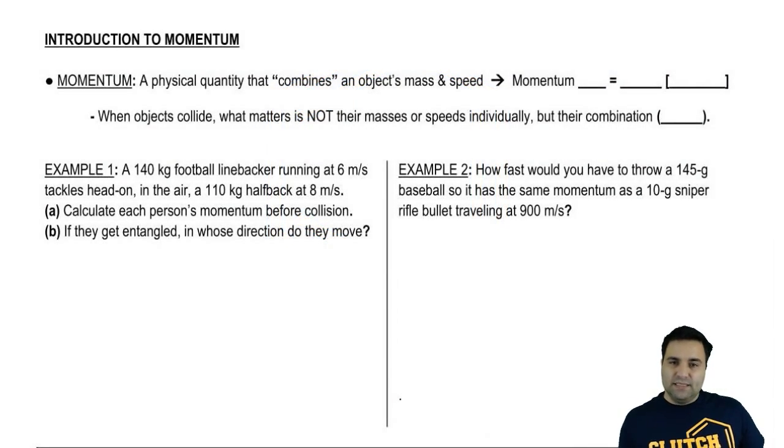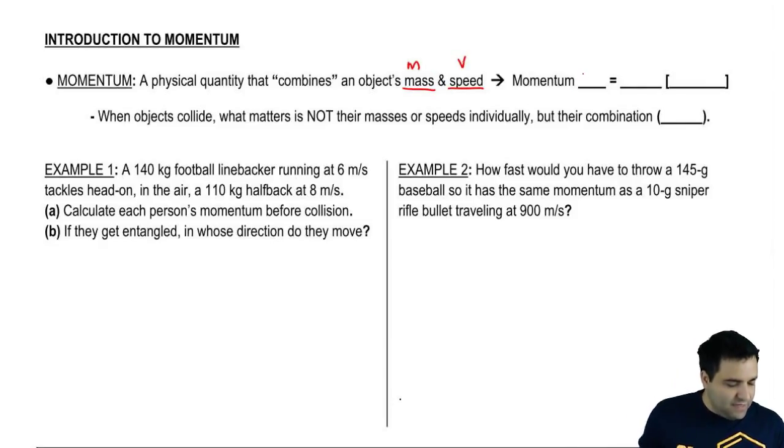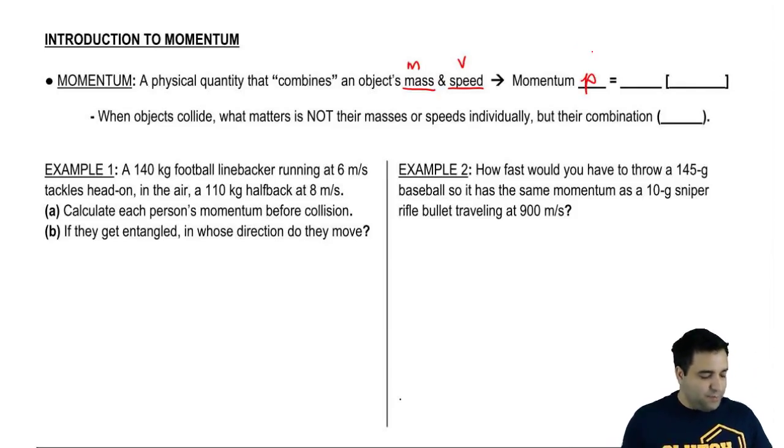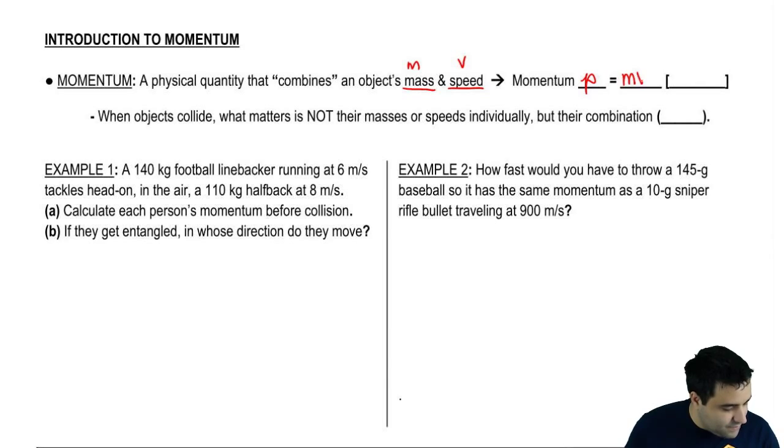So at the simplest level, momentum is a physical quantity that combines an object's mass and an object's speed. Now, momentum is given by the letter p, a lowercase p. Uppercase p is reserved for power. Momentum is a lowercase p. And it's a combination of mass and velocity. And it's actually just a multiplication of the two. It's mass times velocity.